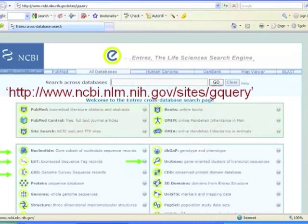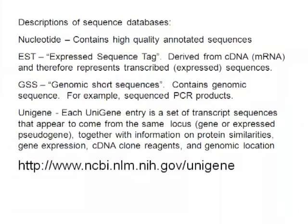If we go back to the National Center for Biotechnology Information and look at the kind of databases housed there, there are four databases that I've highlighted. Each of them contains slightly different information. The nucleotide database — the one I showed you for the SP6 gene — contains high-quality annotated sequences, so there's quite a bit of information associated with each sequence in that database.